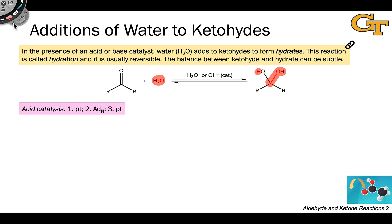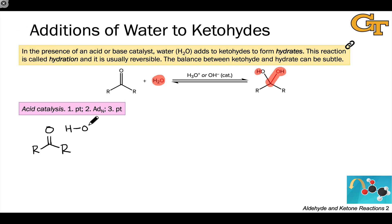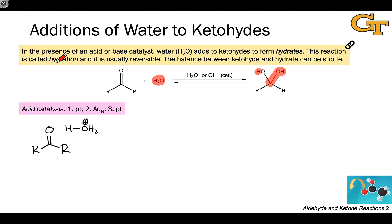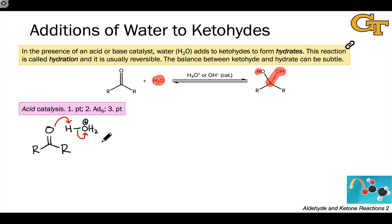Mechanistically, an acidic or basic catalyst is required to facilitate nucleophilic addition. For example, in the presence of an acid catalyst, the first step is protonation of the carbonyl oxygen. This generates a protonated carbonyl intermediate, which is especially electrophilic at the carbonyl carbon.